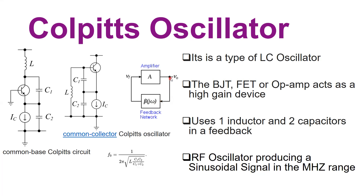We sense the output and take a fraction of it — that is why the feedback network is called an attenuator, because it reduces the output and feeds a portion back to the input. The amplifier block provides a 180-degree phase-shifted output, and the remaining 180-degree phase shift is provided by the feedback. A multiplied by beta — the closed-loop gain — must have a phase of exactly zero degrees or multiples of 360 degrees. The second oscillation condition is that A multiplied by beta, the loop gain, must be greater than or equal to one.